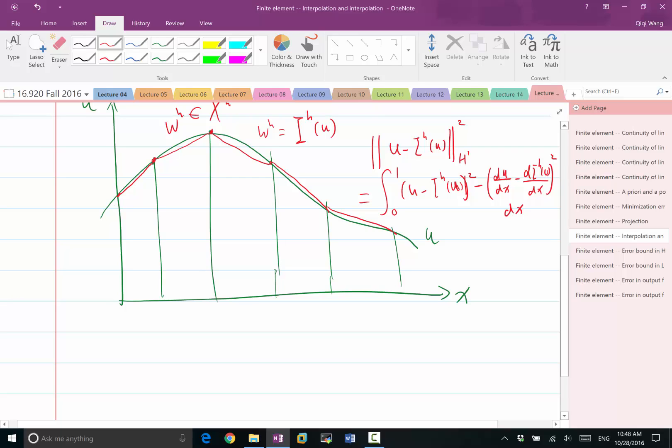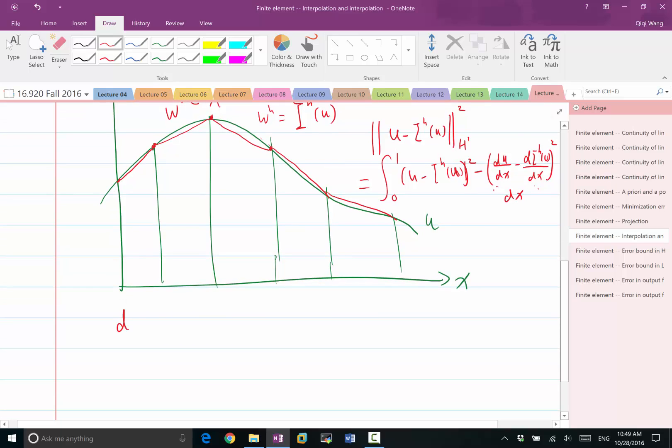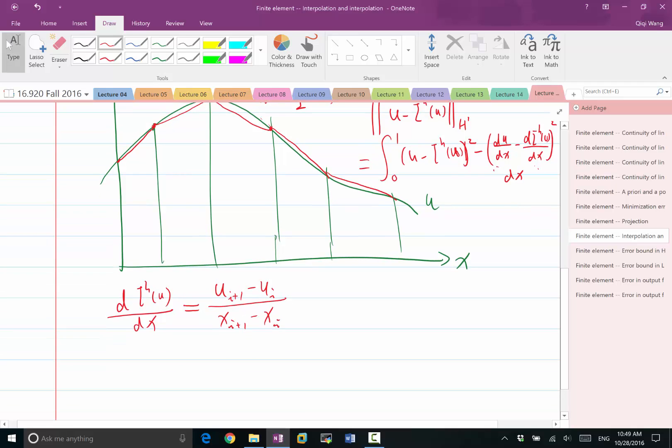So we look at, first we need to analyze how big is this approximation, what is the maximum difference between the red line and the green line. So let's first look at the maximum difference between the derivatives. And in order to do that, I need to use, so first of all, the derivative of the interpolant over an interval is going to be constant. It's going to be U at grid point I plus 1 minus U I divided by X I plus 1 minus X I. So that's the slope of this curve over that interval, over the element.